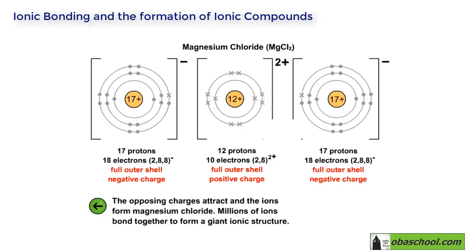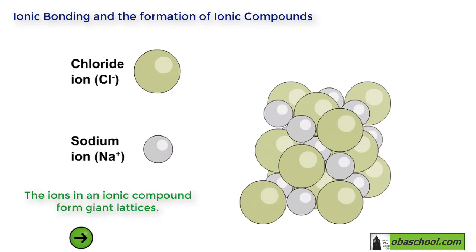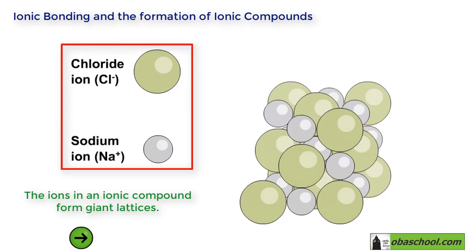The opposing charges attract and the ions form magnesium chloride. Millions of ions bond together to form a giant ionic structure — so it's not only those three ions. When ions are formed, they do not produce individual molecules. Sodium chloride, NaCl, is not made up of pairs of Na⁺ and Cl⁻ ions.